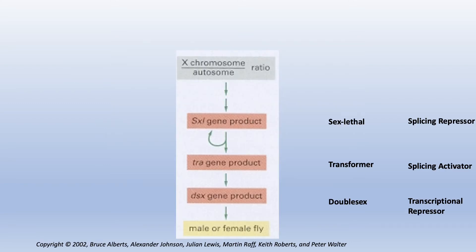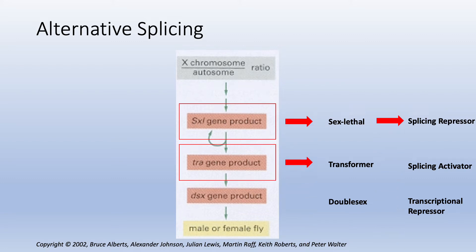I mentioned before that the process of alternative splicing also plays a critical role in the sex determination pathway. A few different genes have been identified as key players in this process. This includes two splice factors, sex lethal, which is a splicing repressor, transformer, which is a splicing activator, and a transcription factor, double sex, which is a transcriptional repressor. The products of these genes in the sex determination pathway are all subject to alternative splicing.